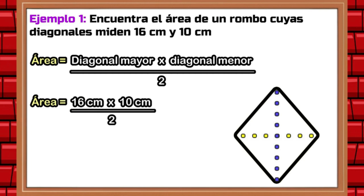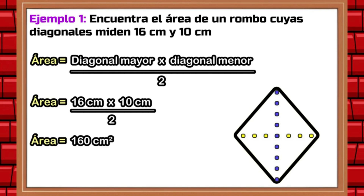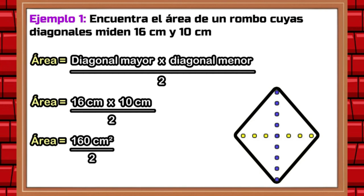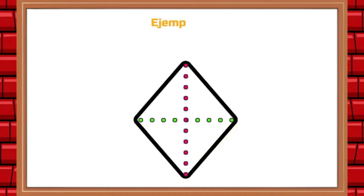First, we multiply the lengths of the diagonals, which are 16 centimeters and 10 centimeters. This multiplication results in a product of 160. Since these are measurements in centimeters, by multiplying centimeter by centimeter, we obtain square centimeters. Therefore, the final result is 160 square centimeters. After obtaining that result, we then proceed to divide it by two. 160 divided by two equals 80 square centimeters.